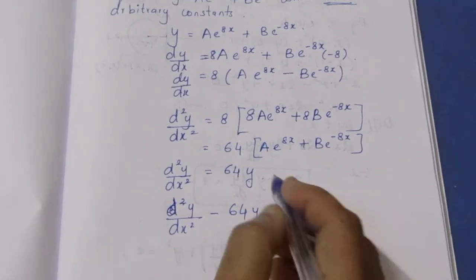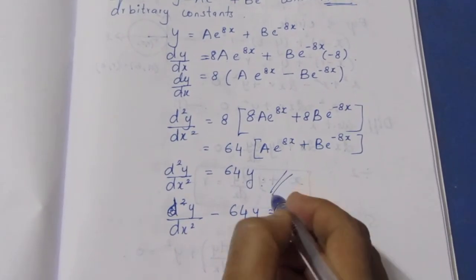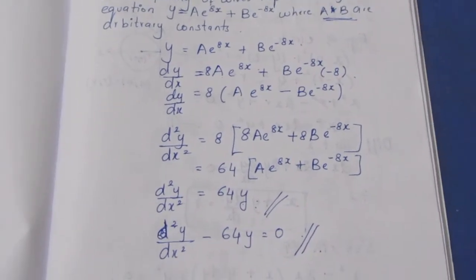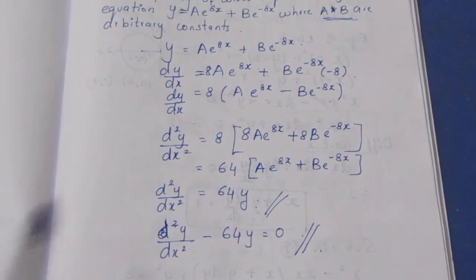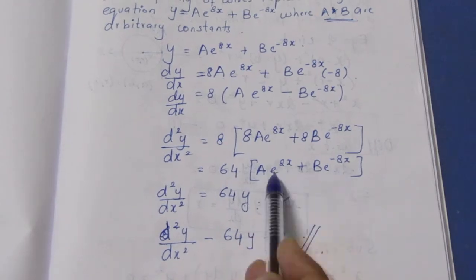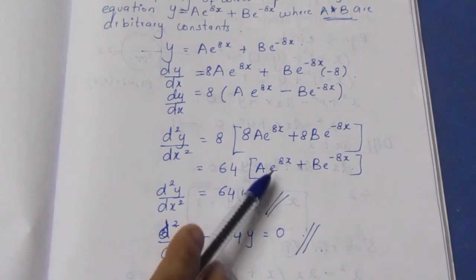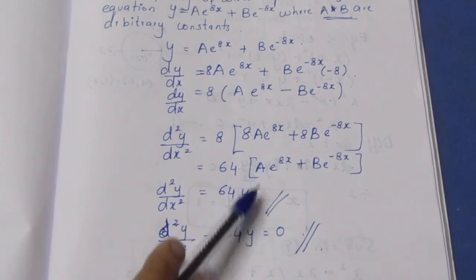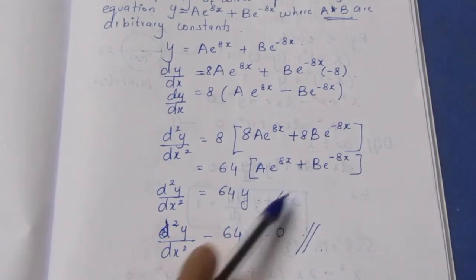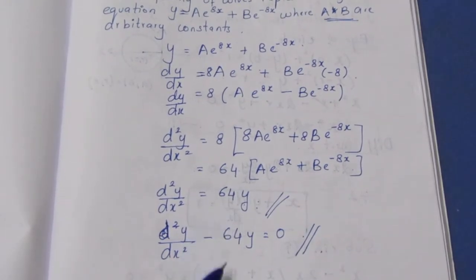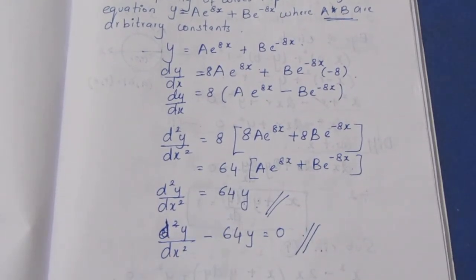This is the required equation. This is the differential equation for the sum: d squared y by dx squared minus 64y is equal to 0. If you remove the arbitrary constants by differentiating, you get the required differential equation. Thank you.